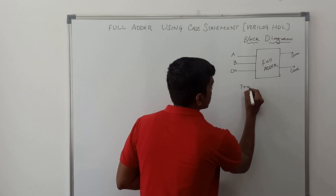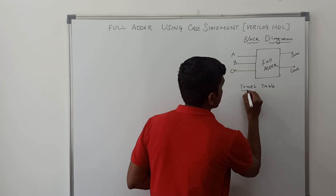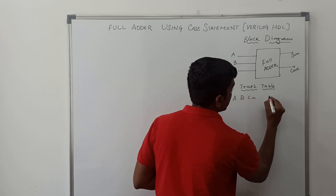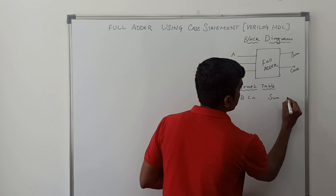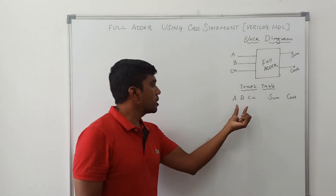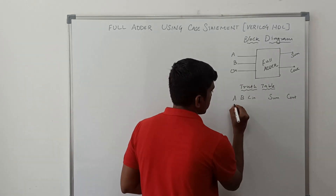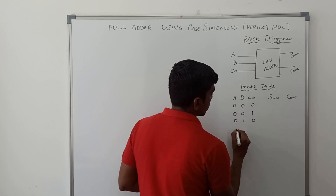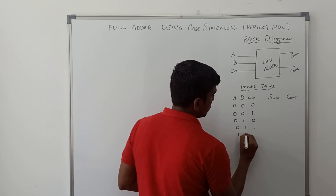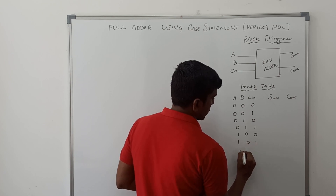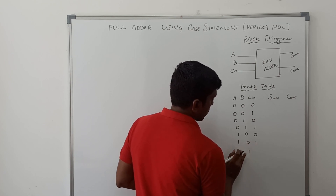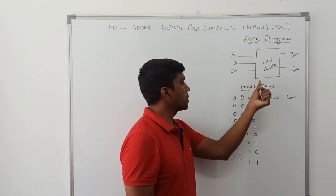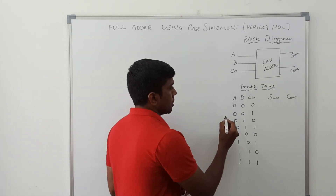Now I draw the truth table. In this full adder circuit it has three inputs: A, B, Cin, and outputs Sum and carry out. These three variables produce eight combinations of input values: 000, 001, 010, 011, 100, 101, 110, 111.